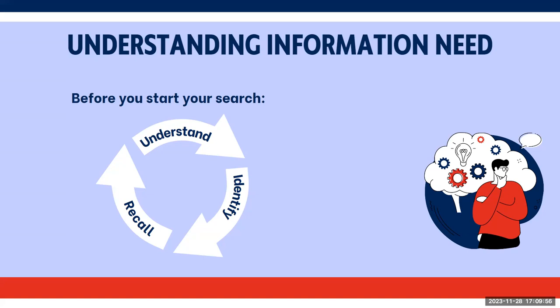By identifying what sources you need to find, think about what kind of government information you need to answer your research question, what geographic jurisdiction, and what timeframe you need. The next step will be to identify the type of source you need. Lastly, you want to recall any relevant existing knowledge to identify any gaps or uncertainties. This will help you figure out where to look to find the information you need.